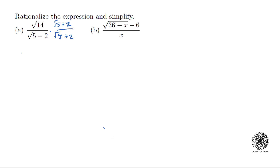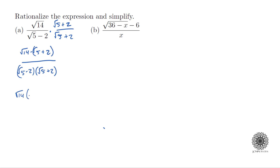In the numerator you get the square root of 14 times the square root of 5 plus 2, which doesn't get much simpler. In the denominator, though, you have the square root of 5 minus 2 times the square root of 5 plus 2. When I FOIL those out, I get square root of 5 times square root of 5, which is the square root of 5 squared, giving us 5. Then I have plus 2√5.